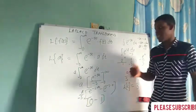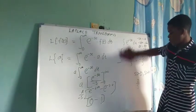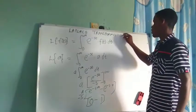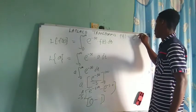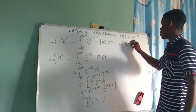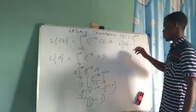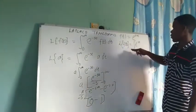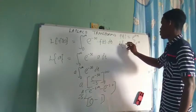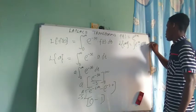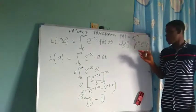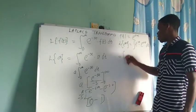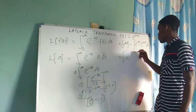Now we can check for another function of T. In this case we move from the constant function to an exponential function of T. Let's say f(T) = e^(AT). So the Laplace transform of e^(AT) is just going to be the integral from 0 to infinity of e^(−ST) times e^(AT) dT. In the integrand we see e^(−ST) times e^(AT), which gives the integral of e^((−S+A)T) dT, or e^(−(S−A)T) dT.